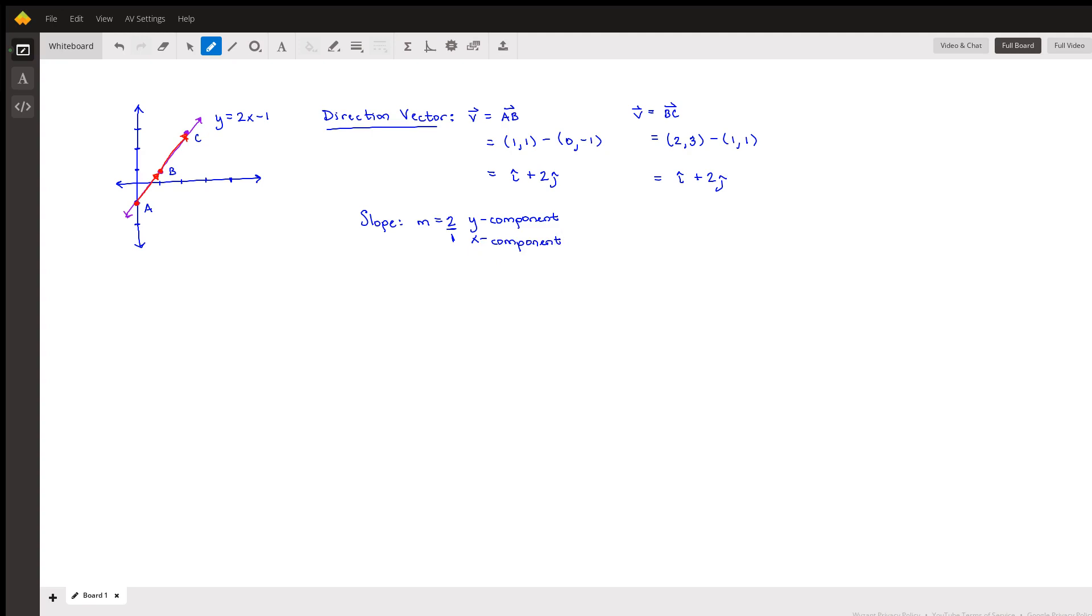So it's not a coincidence that if you look at your direction vector, the y component of your direction vector is 2, and the x component of your direction vector is 1, just like slope. So you can kind of see the direction vector just from the slope alone, right?